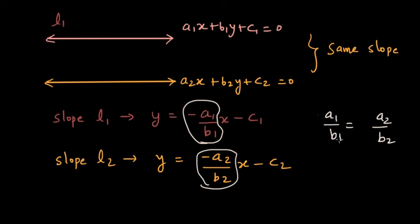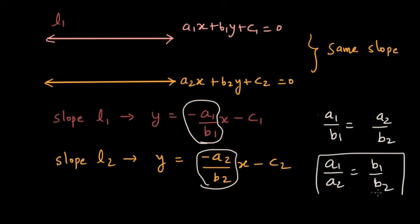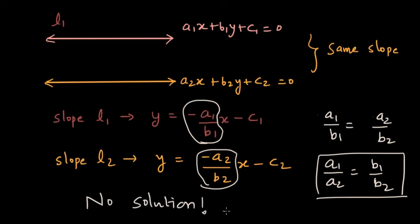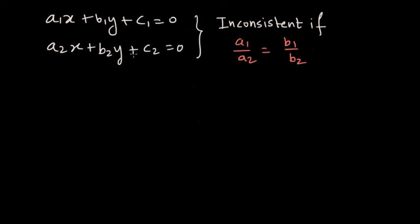In other words, we can say that a1 by a2 is equal to b1 by b2. If this condition is satisfied, then the lines are parallel. And if the lines are parallel, they have no solution, because they do not intersect. For the given lines, they don't have a solution because they are parallel, meaning a1 by a2 is equal to b1 by b2.